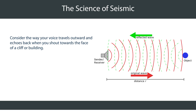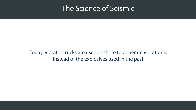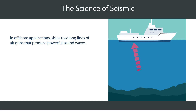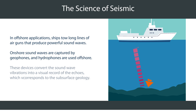As a simple example, consider the way your voice travels outward and echoes back when you shout towards the face of a cliff or building. The same principle applies to seismic sound waves — they echo differently with each underground geological rock formation they encounter. Today, vibrator trucks are used onshore to generate vibrations instead of the explosives used in the past. In offshore applications, ships tow long lines of air guns. Onshore, sound waves are captured by geophones, and hydrophones are used offshore. These devices convert the sound wave vibrations into a visual record of the echoes, which correspond to the subsurface geology.